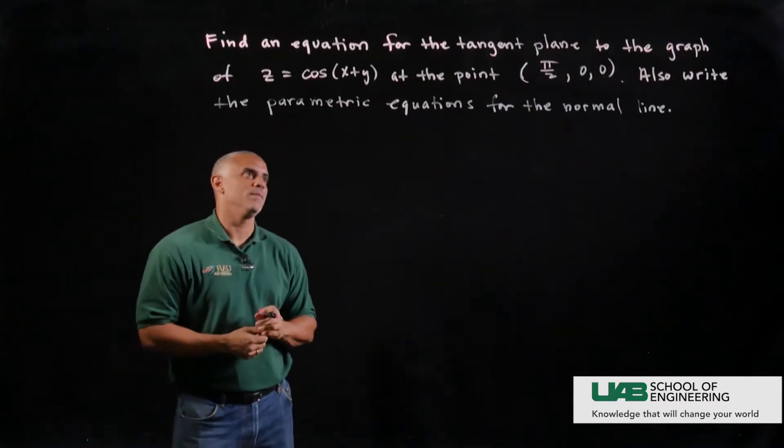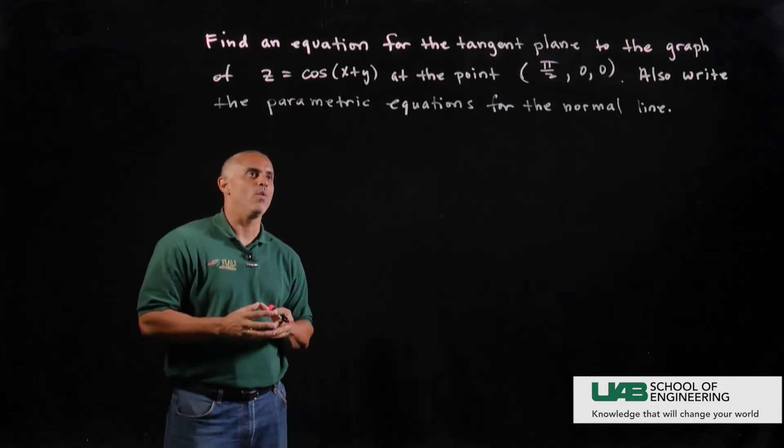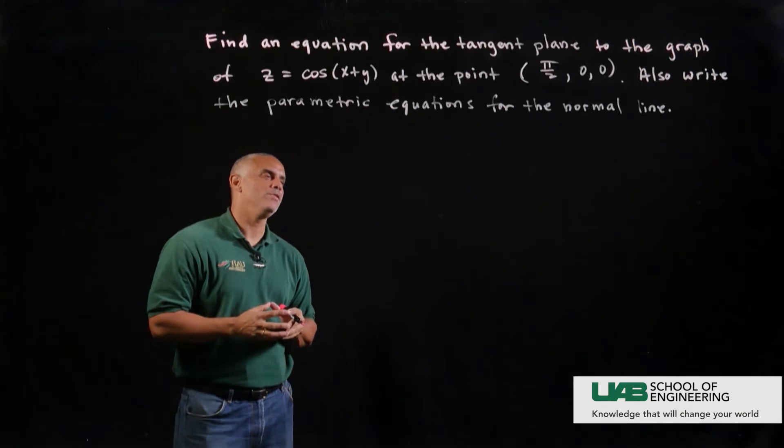Next, let's find an equation for the tangent plane to the graph of z equals the cosine of x plus y at the point pi over 2, 0, 0.